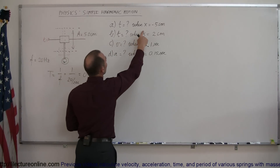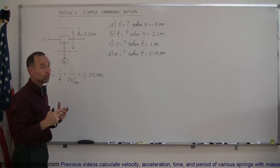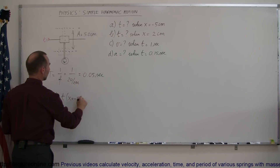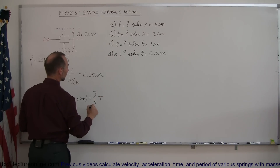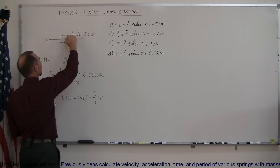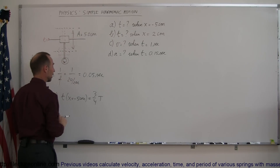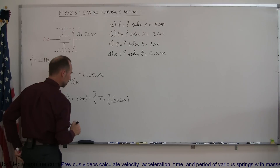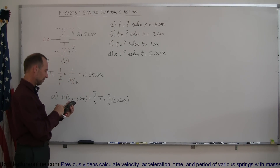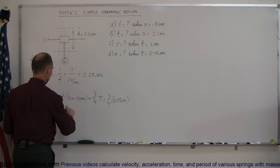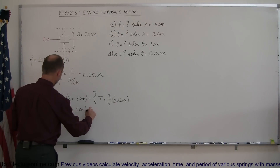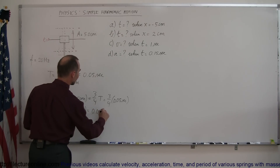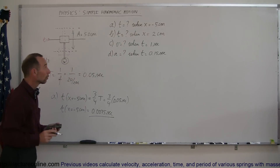Since we don't reach the minus 5 cm position until three-quarters of the cycle, which is three-quarters of the period, for part A the time when x equals minus 5 cm is equal to three-quarters of the period. Starting at equilibrium, moving up, coming back down to minus 5 cm is three-quarters of the cycle — three-quarters times 0.05 seconds — which equals 0.0375 seconds. That's how long it takes to go through three-quarters of the initial cycle.